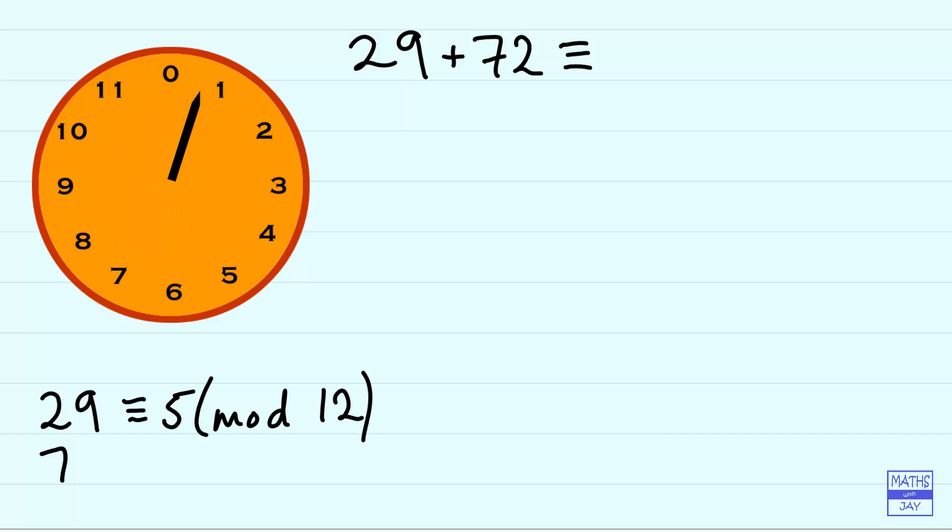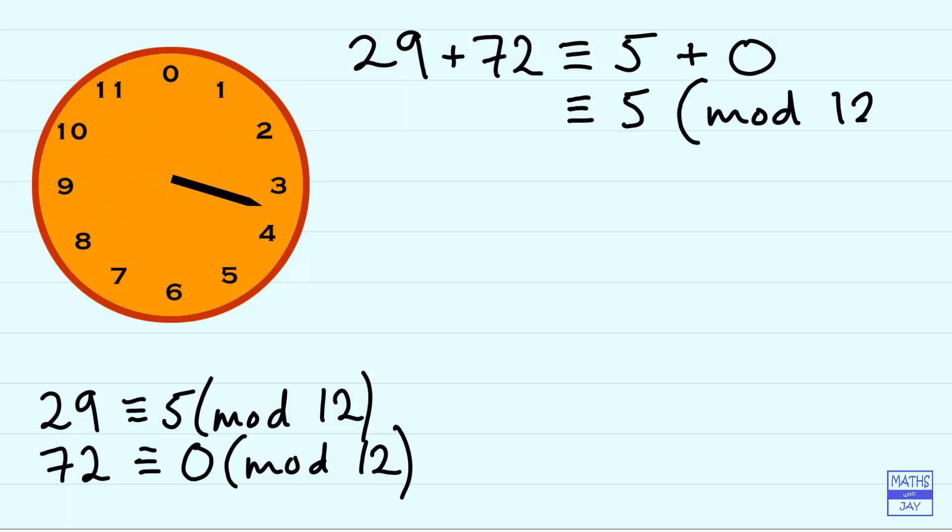What we could do here is say, well, 29 is congruent to 5, 72 is congruent to 0. So when we add those two together we get an answer of 5.